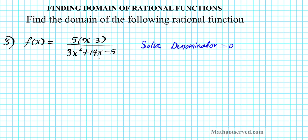In this problem, the denominator is where our focus is going to be. Our denominator is 3x squared plus 14x minus 5. We set it equal to zero as indicated here.